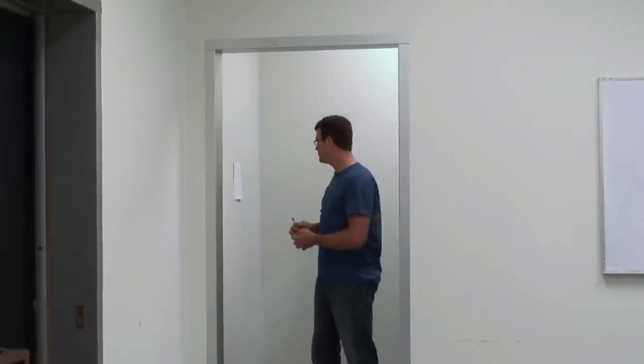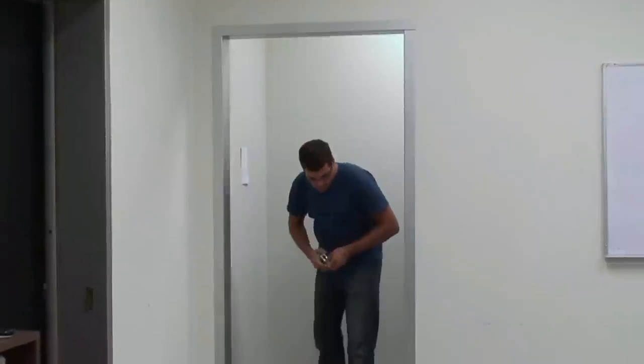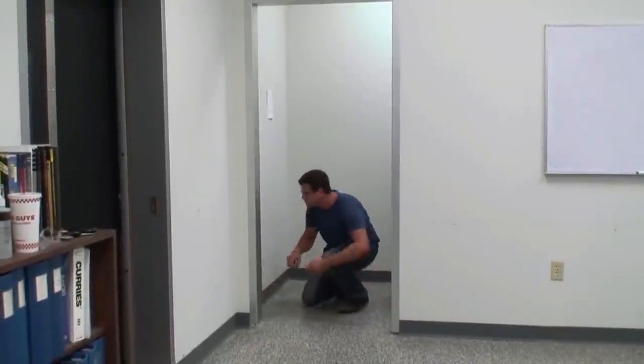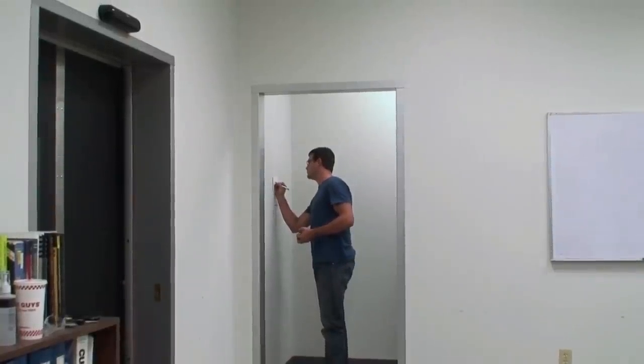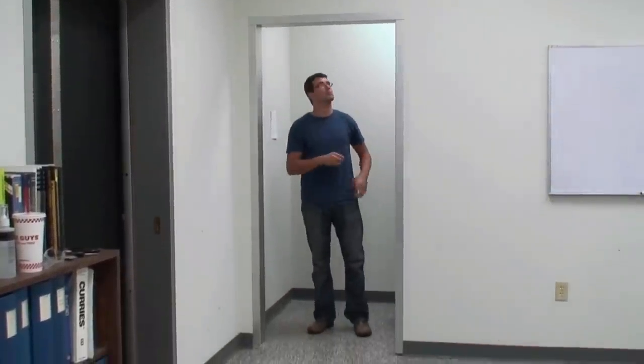You may get different measurements for each location. Use the smallest measurement as your final opening width. The smallest measurement is used to ensure your door fits correctly when installed.